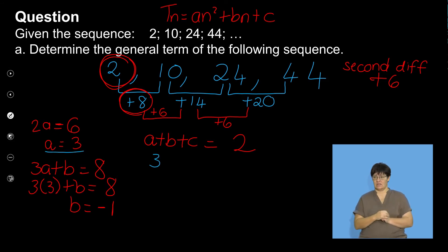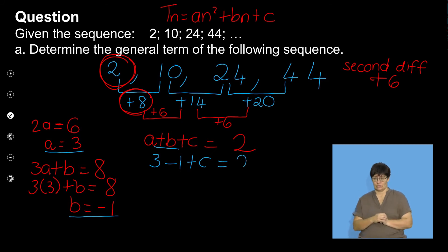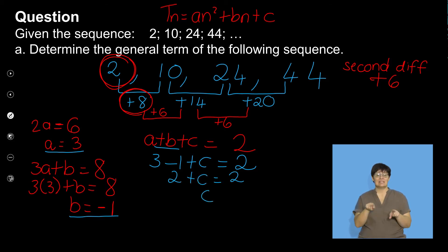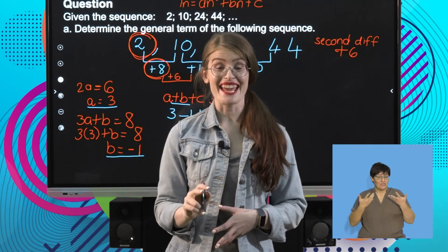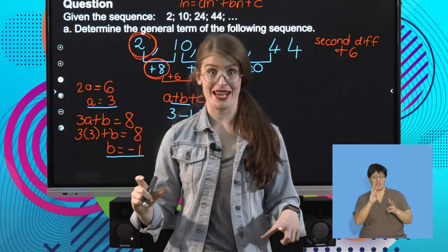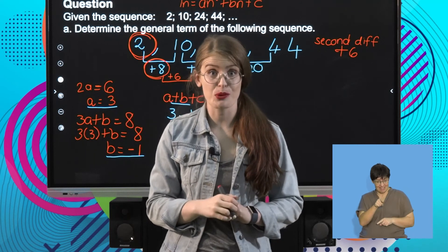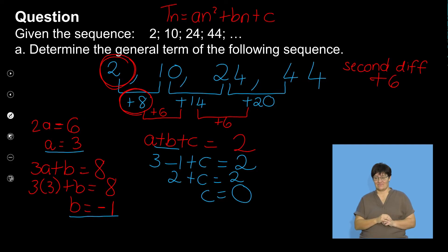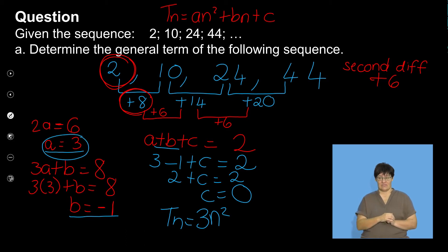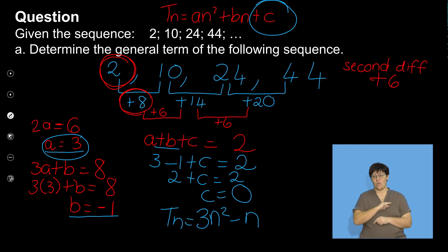Then 3A plus B equals the first term of the first differences, which is 8. Substituting A equals 3: 9 plus B equals 8, so B equals negative 1. Last, A plus B plus C equals the first term of the sequence which is 2. Substituting: 3 plus (negative 1) plus C equals 2, giving 2 plus C equals 2, so C equals 0. The general form is TN equals 3N squared minus N.